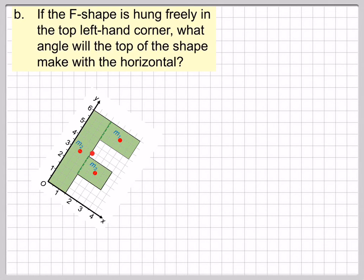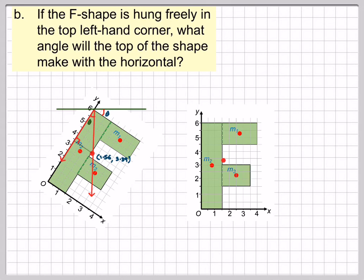So let's just see what this means. If the F shape is to be hung freely, it should be hung there freely and left to fall under gravity, the top left-hand corner, which is there, what angle would the top of the shape make with the horizontal? So this is the horizontal, this is the top of the shape, we need to calculate this angle here. Now that is the same as this angle here. And if we drop a weight down from the horizontal through here, it will pass through our center of mass, which is this point here, 1.56, 3.39. If this was a pendulum, it would actually drop through and it will pass through this point in the center of mass. So this angle here is the same as this angle here.